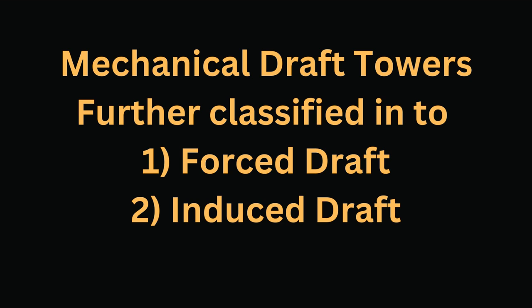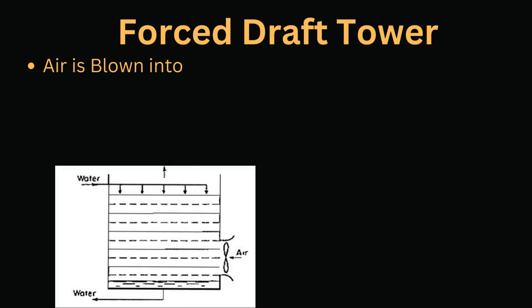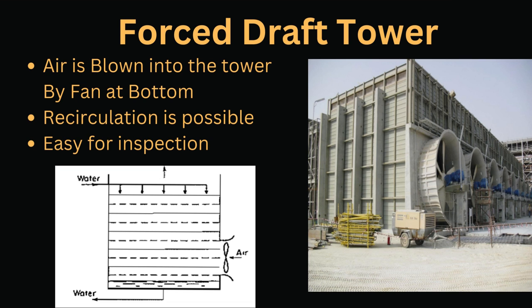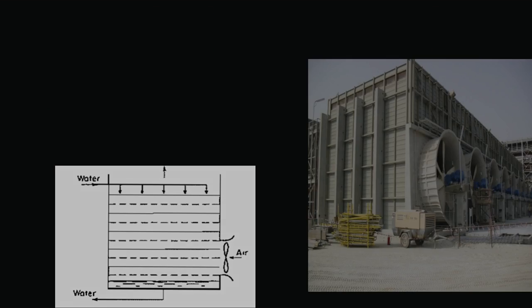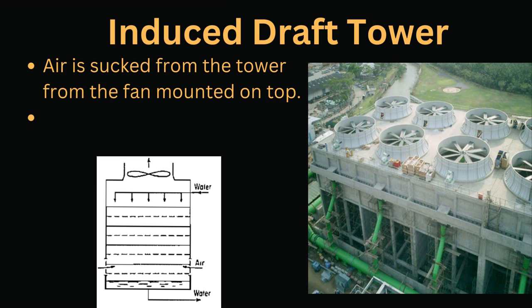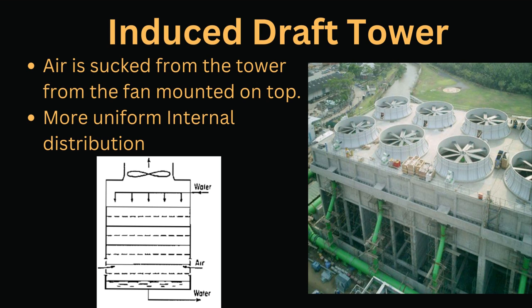Mechanical draft towers include forced draft, where air is blown into the tower by a fan at the bottom — recirculation of hot and humid discharged air into the fan is possible, and it is easy for inspection. Induced draft, where air is sucked from the tower by a fan mounted on top, provides more uniform internal distribution of air.